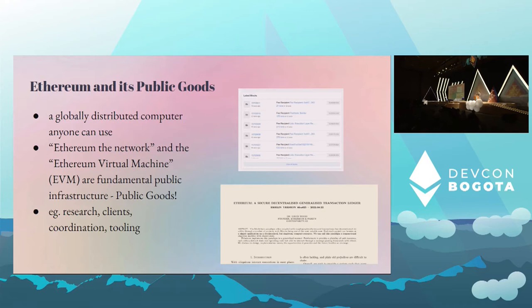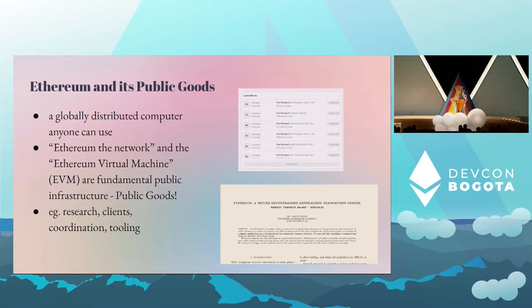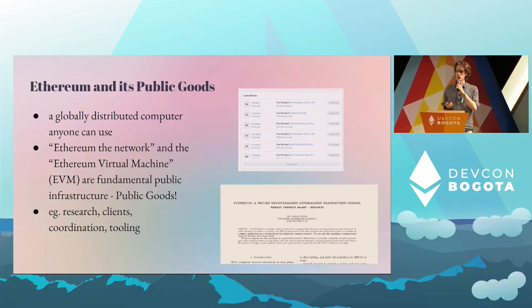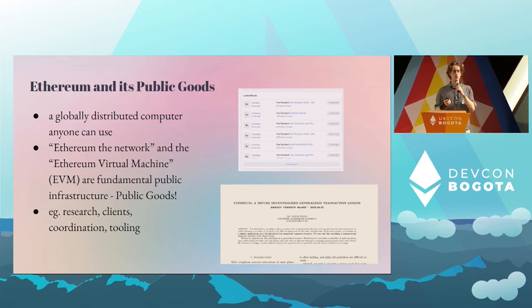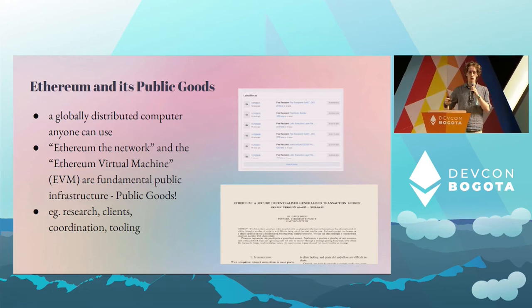If we take a step back, looking at the yellow paper — this is the Ethereum virtual machine — this is another public good that Ethereum developers and core contributors maintain. Many other chains besides Ethereum also use the EVM. So these are two fundamental public goods infrastructure that people depend on, build companies on, store their finances on. The different categories can include the research about where the protocol is going, the client developers implementing the protocol, the coordination work, and then there's tooling — what developers actually use to interact with the chain.